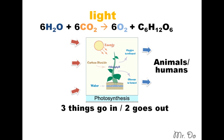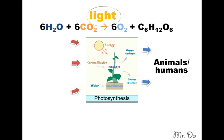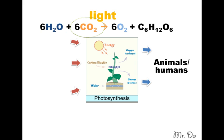Oxygen and sugar is used by animals and humans. So where does the sunlight come from? The sun. Where does water come from? The ground. Where does carbon dioxide come from? Animals and humans. So we give off carbon dioxide, CO2, and the plant gives off oxygen that we use, and then we give off carbon dioxide that the plants use — and it's a cycle. Very cool!